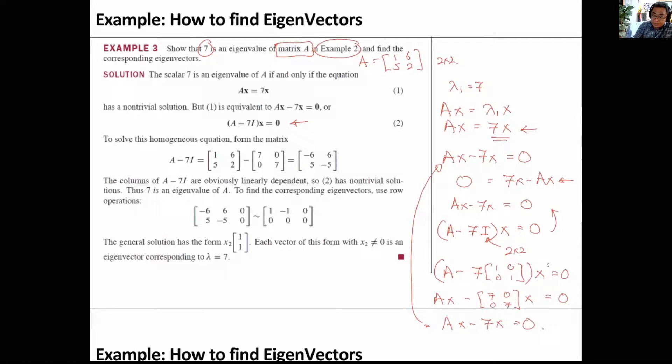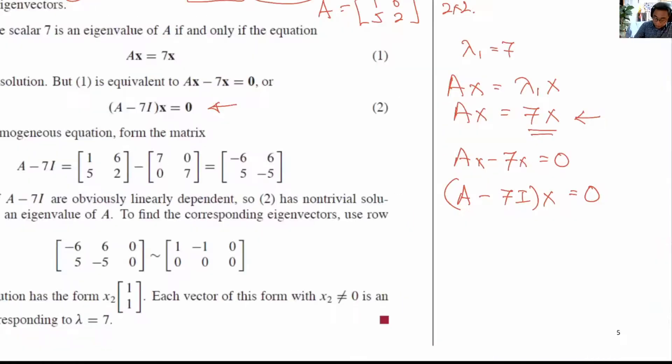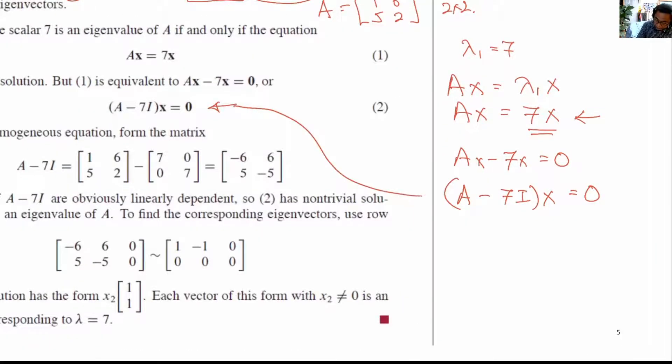so now we will erase and continue with this proof and exercise. So now we are at this point: (A minus 7I) times the vector x equals the 0 vector.